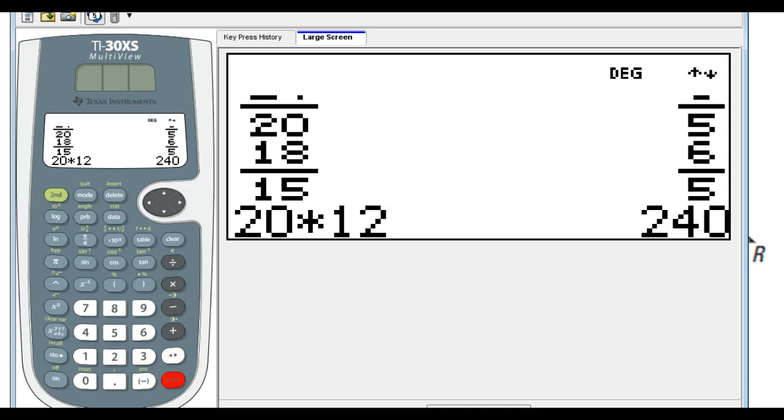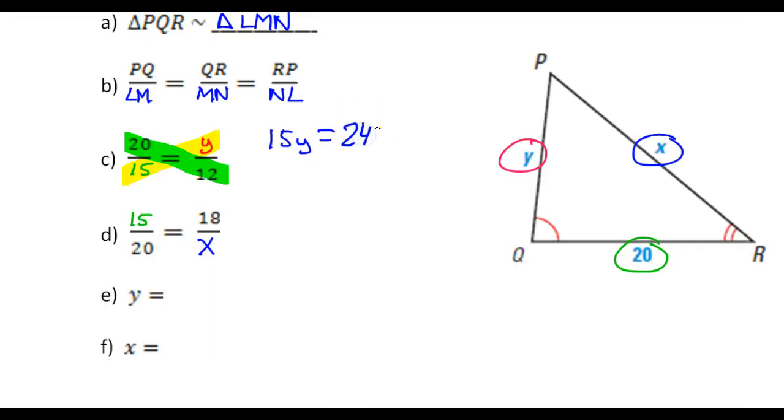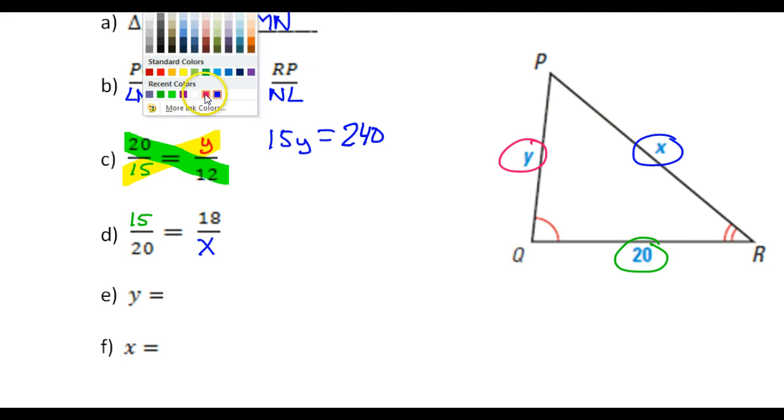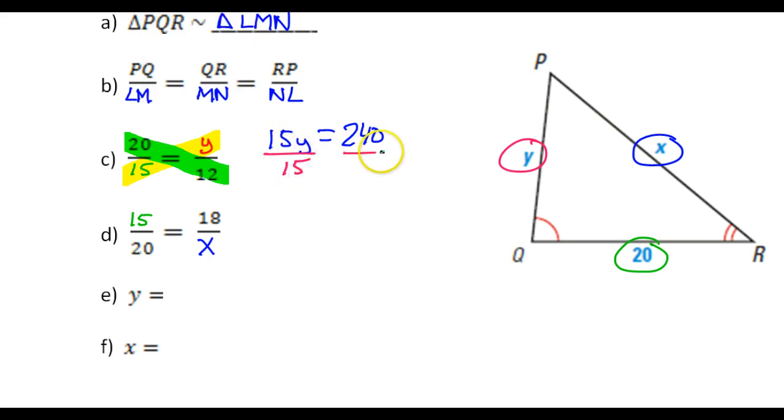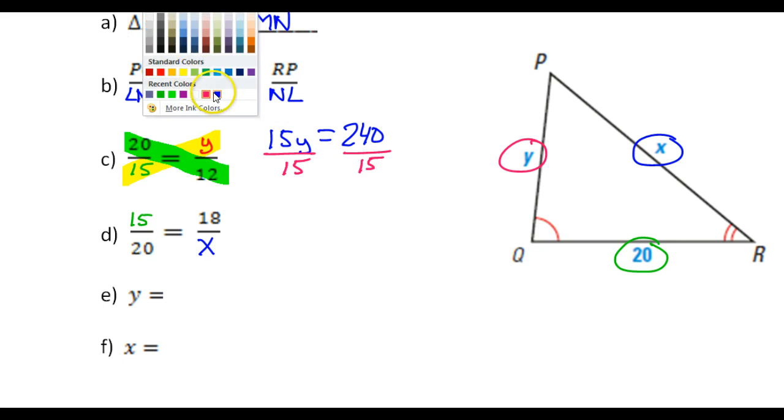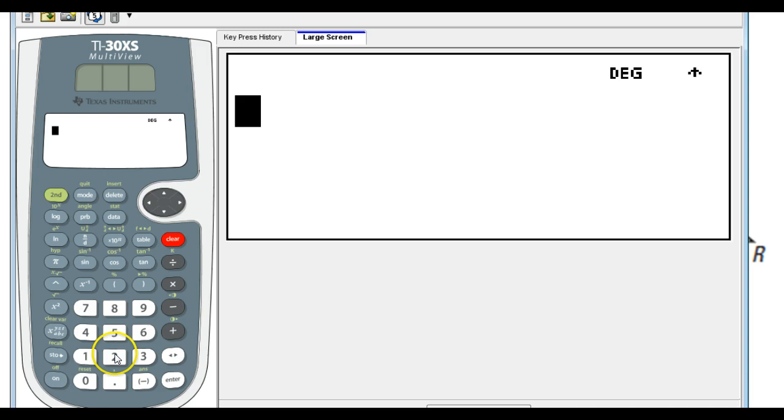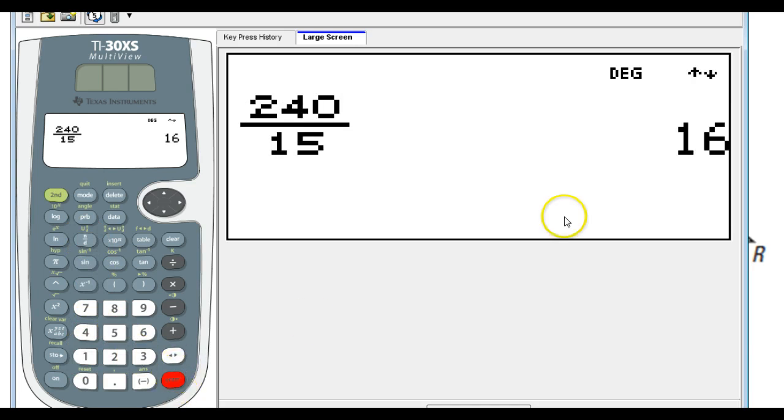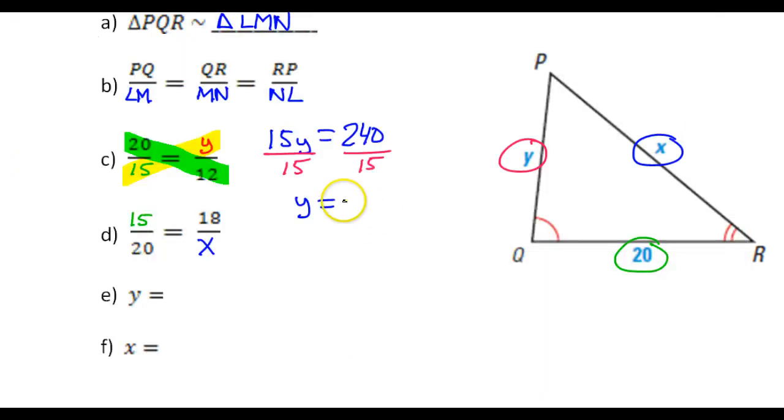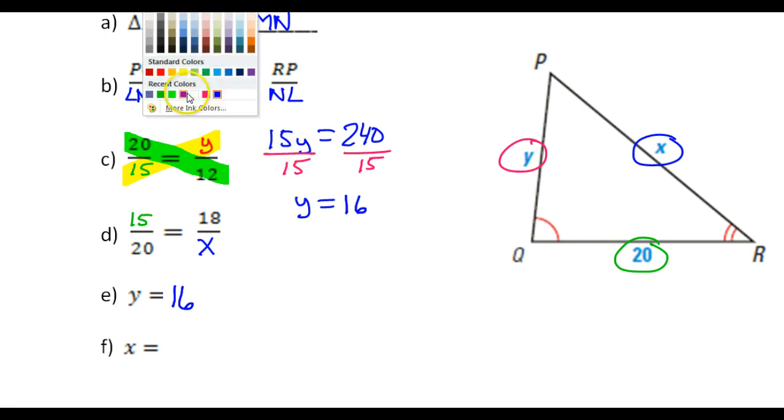And then of course, I could divide by 15 on both sides. So that is 16. So Y comes out to be exactly 16.